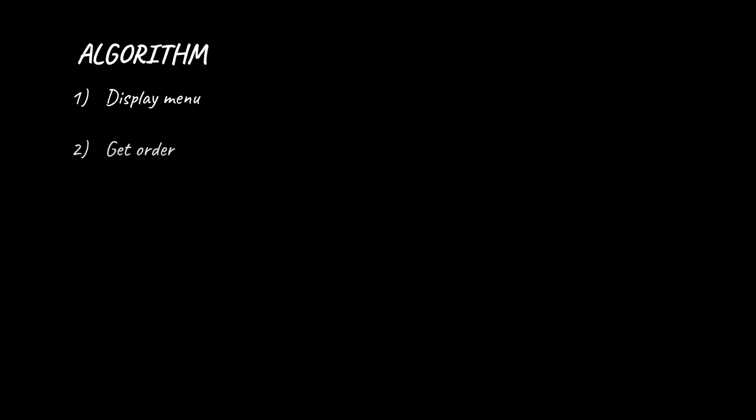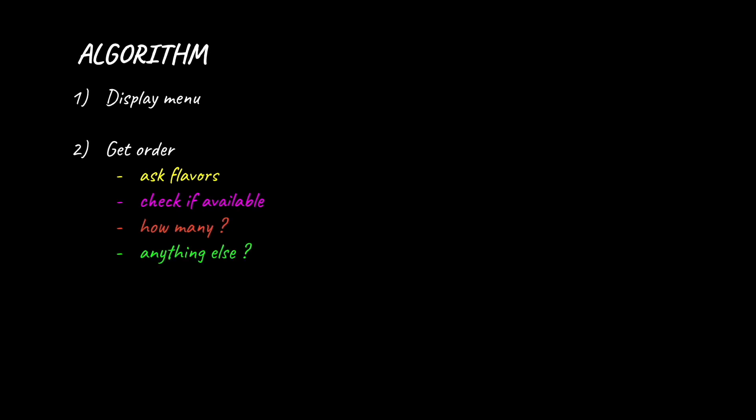Before jumping straight into coding let's go to the board to make sure that we really understand how the program is gonna work. First off we have to display the menu and in the next step we're gonna get the order itself. First we're gonna ask for the pizza and if that is available we're gonna ask how many they want. After that we're gonna ask if they want anything else and we're gonna repeat this over and over till the customer says they are fine. Finally, as the last step we're gonna display the total.